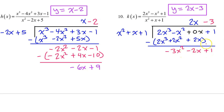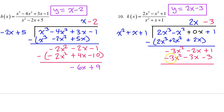Finishing the long division: take negative three and multiply. Negative three times x squared is negative three x squared, negative three times x is negative three x, and negative three times one is negative three. Then subtract — these cancel. Negative two x minus negative three x is like negative two x plus three x, which is simply x. One minus negative three is like one plus three, so that's four — and that's the remainder.